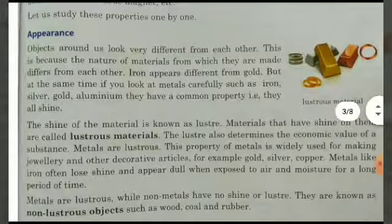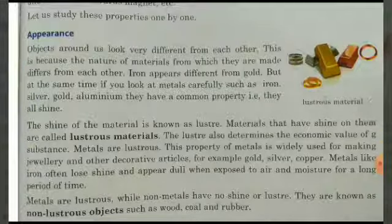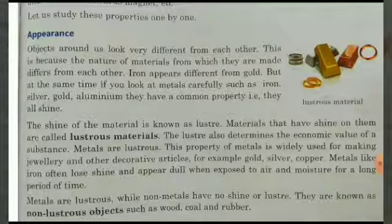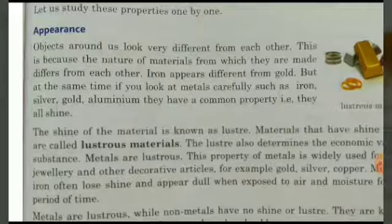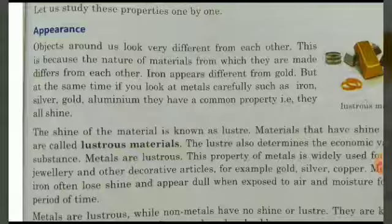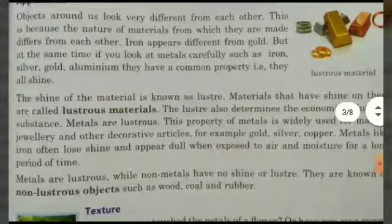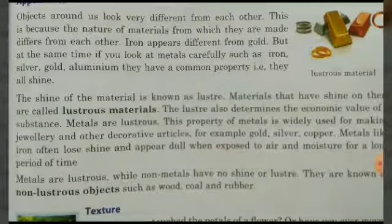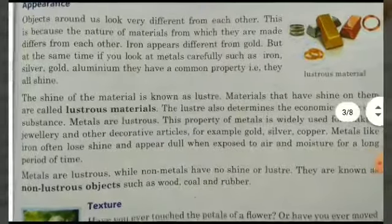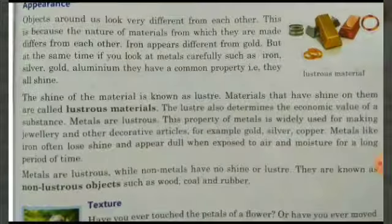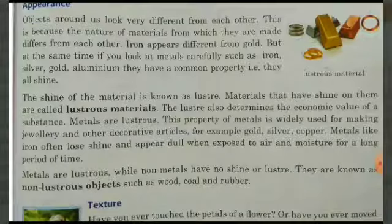At the same time, if you look at metals carefully — such as iron, silver, gold, and aluminum — they have a common property: they all shine. Metals are such materials that shine. The shining property of a material is known as lustre.